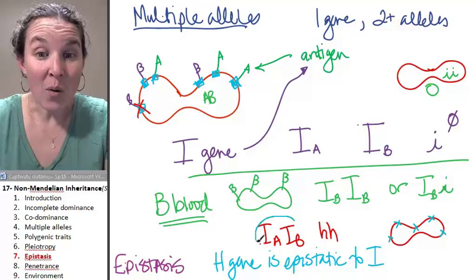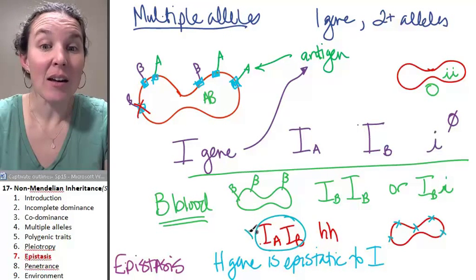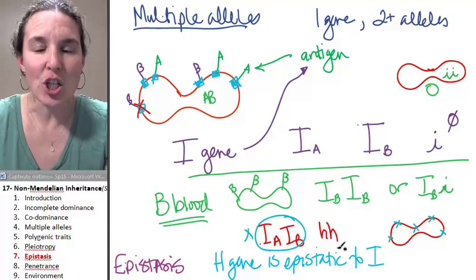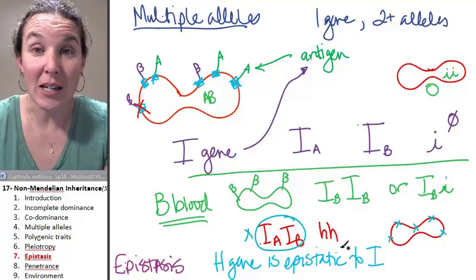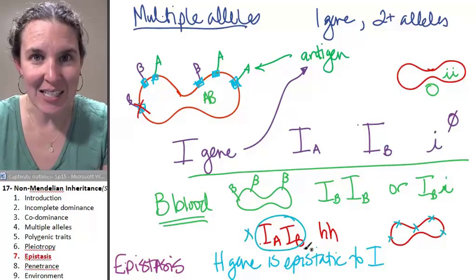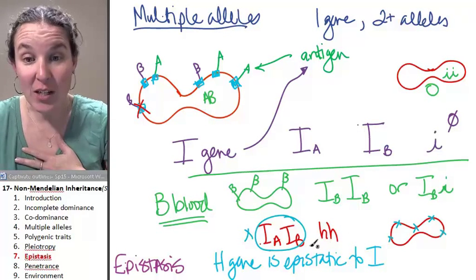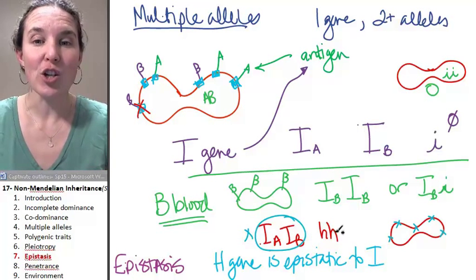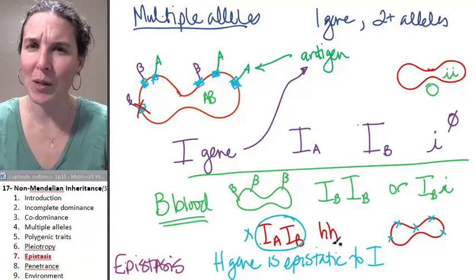So now, the genotype, the blood typing genotype is irrelevant. The H gene trumped it. H was epistatic to I. Your phenotype, in this case, your genotype says you should have type AB blood. Your phenotype is type O blood.